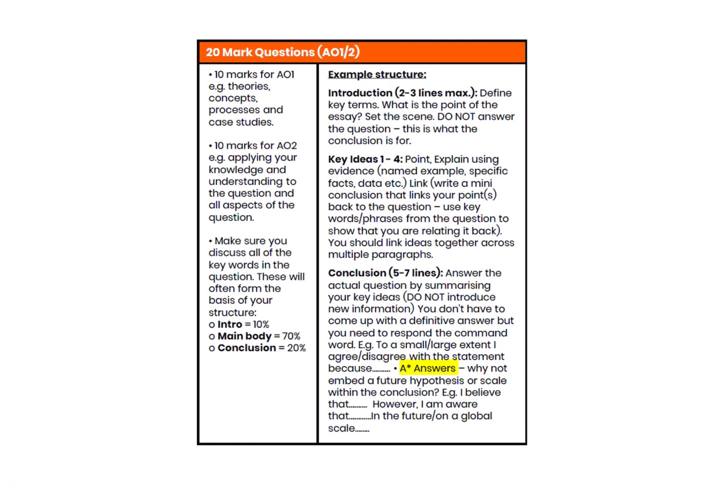Last but not least: twenty-mark questions — the jewel in the crown where the majority of marks are. These are split: 10 marks for AO1 — theory, concepts, processes, case studies, examples — and 10 marks for AO2 — your analysis, how well you link to other aspects of geography, and the quality of your conclusion. A suggested structure: roughly 10% introduction, 70% main body, and 20% conclusion. The tip about nine-markers — writing your line of argument and case study detail in note form first, deciding if it agrees or disagrees — works well here too.